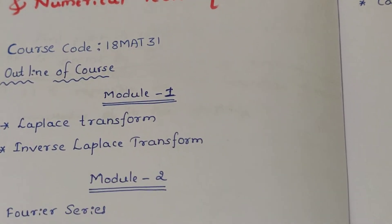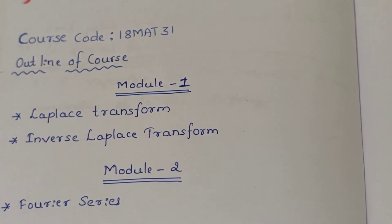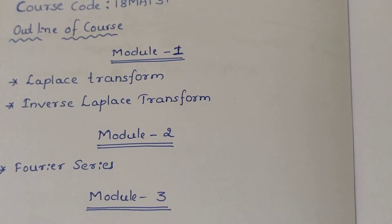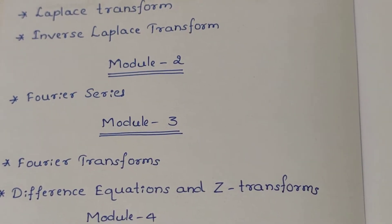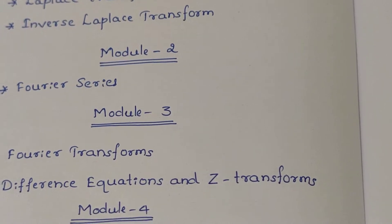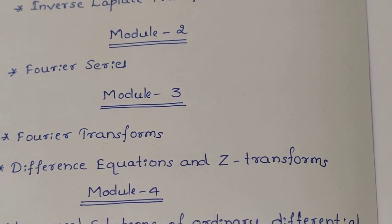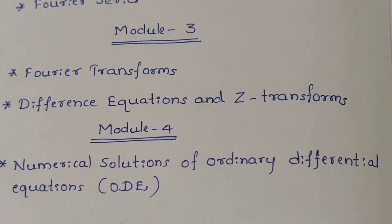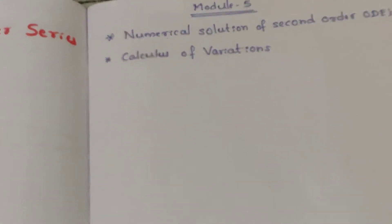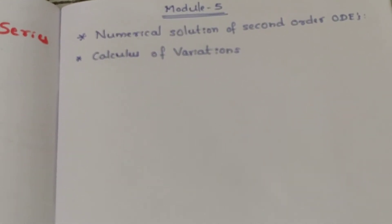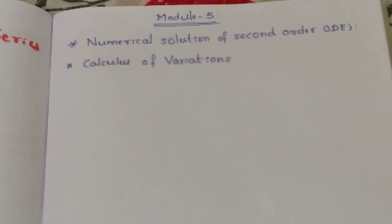The outline of the course — the syllabus: Module 1 contains Laplace Transform and Inverse Laplace Transform. Module 2 is Fourier Series. Module 3 is a continuation covering Fourier Transforms, Difference Equations, and Z-Transforms. Module 4 is numerical solutions of ordinary differential equations, and Module 5 is numerical solution of second-order ODEs and Calculus of Variations.